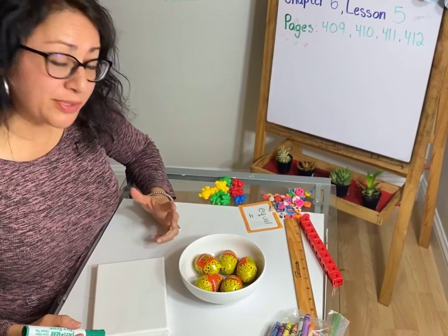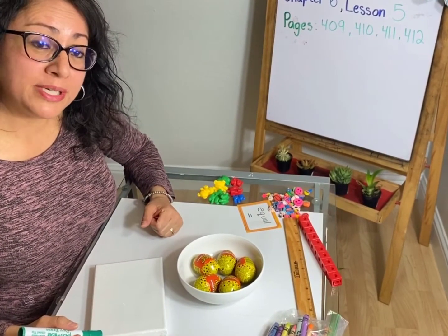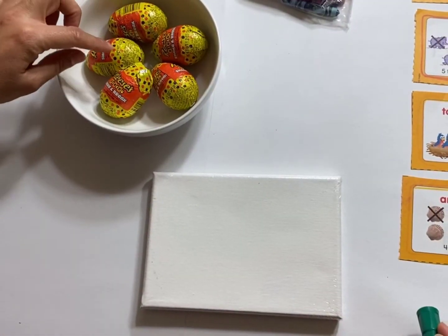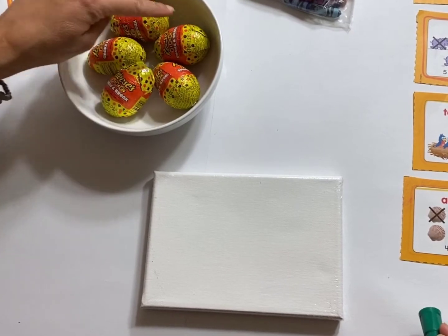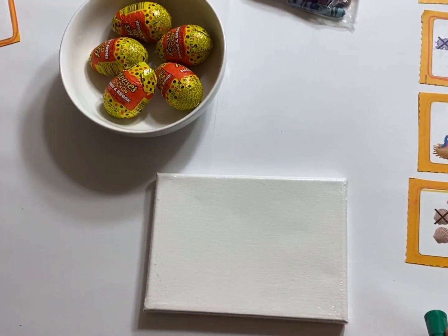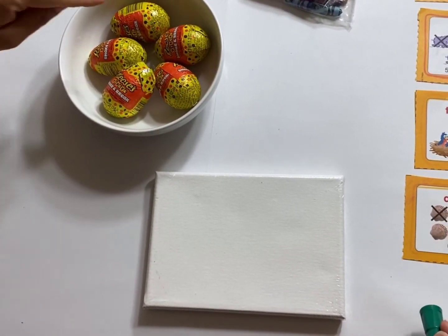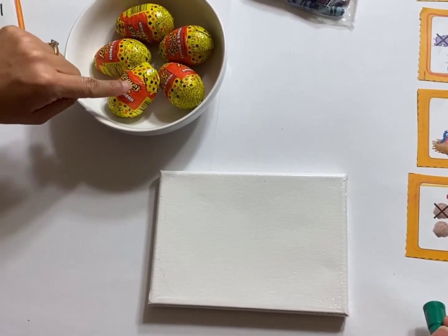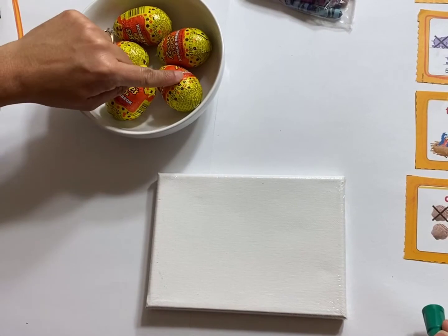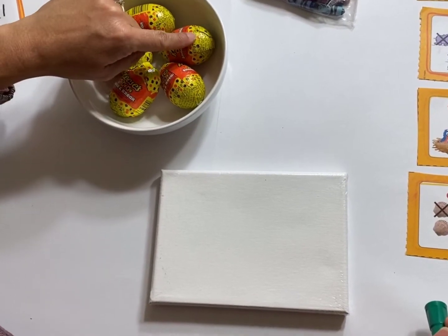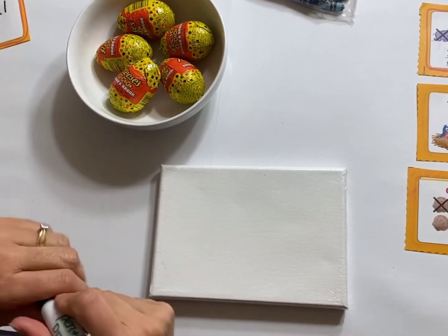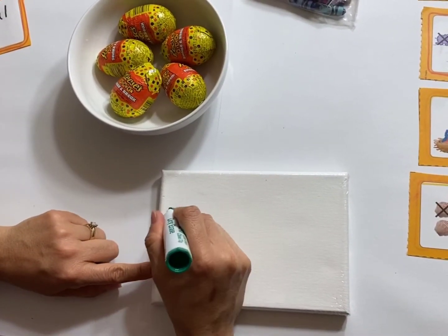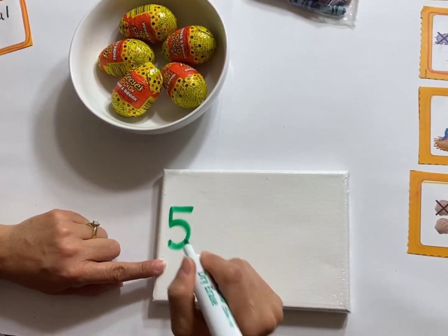Let's warm our brains up with a math problem, Kinders. I have five Easter candies left. Ready, count with me. One, two, three, four, five. Five. All right, let me write my five.